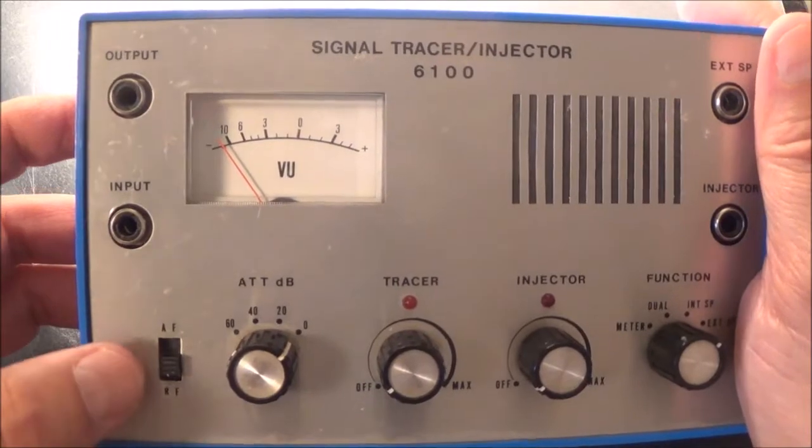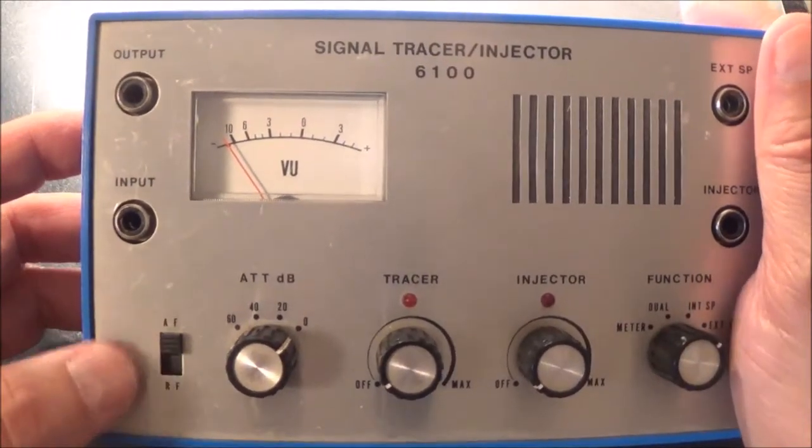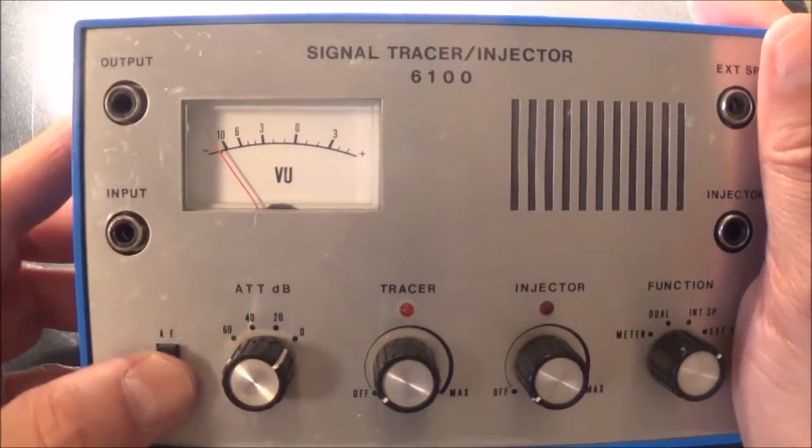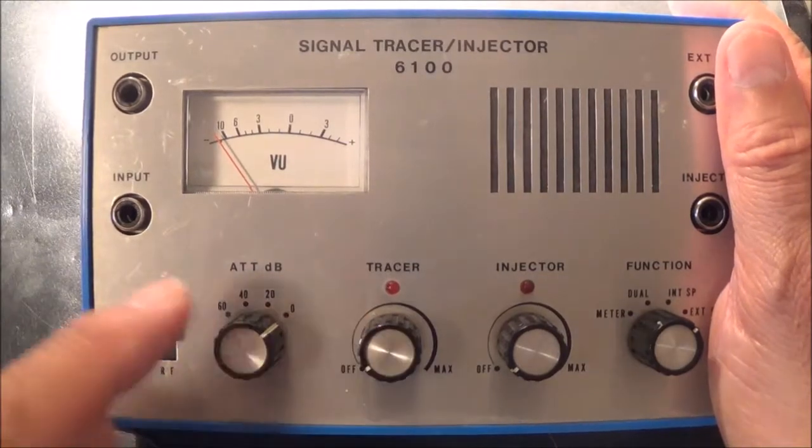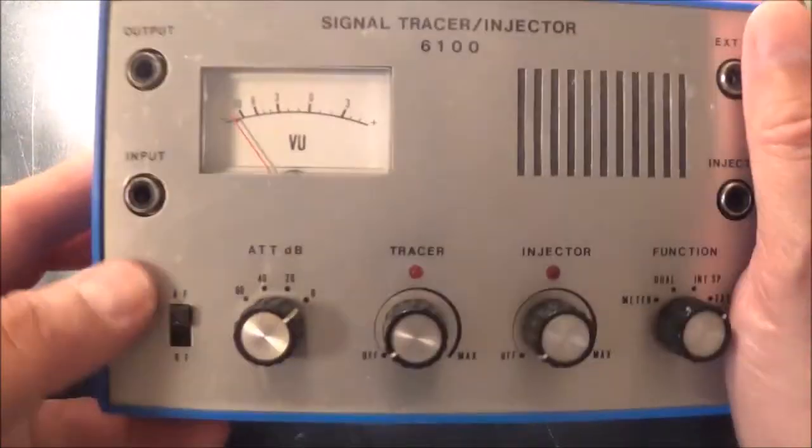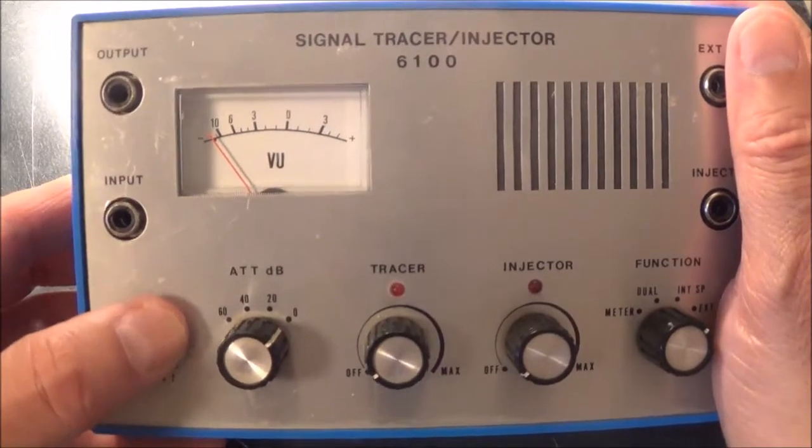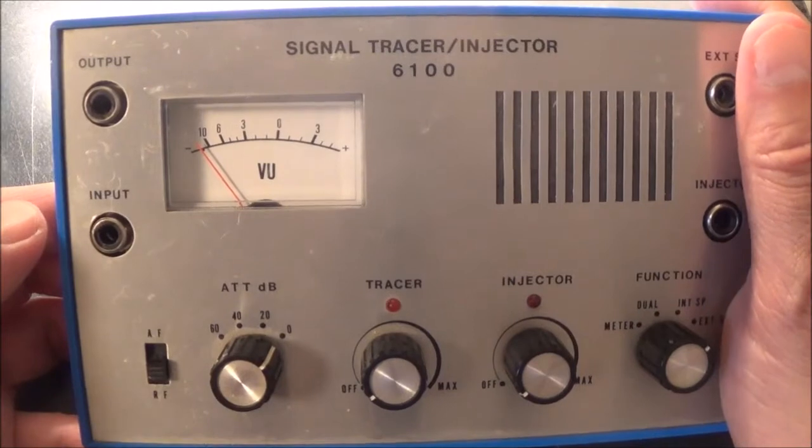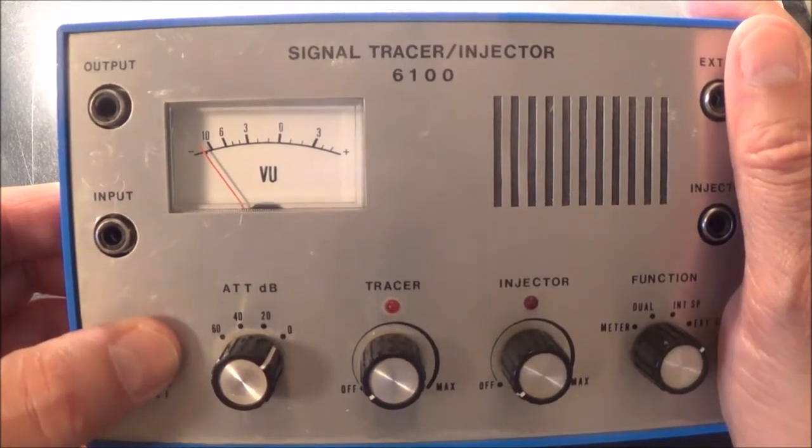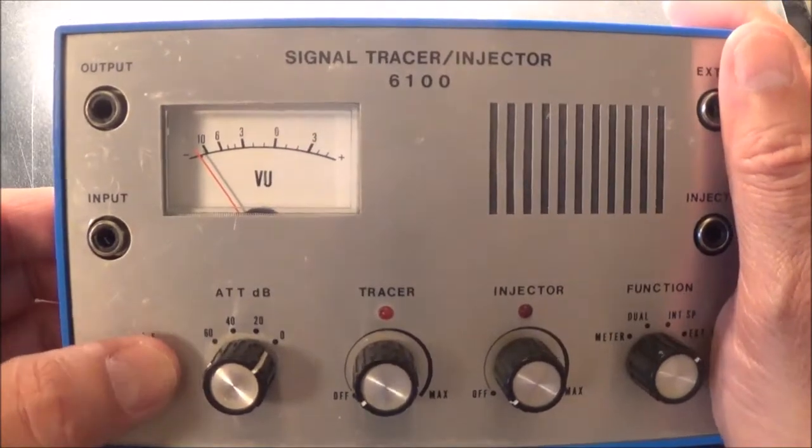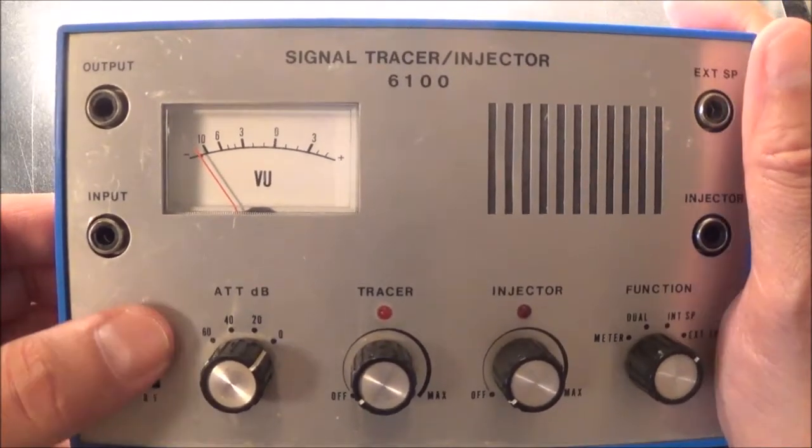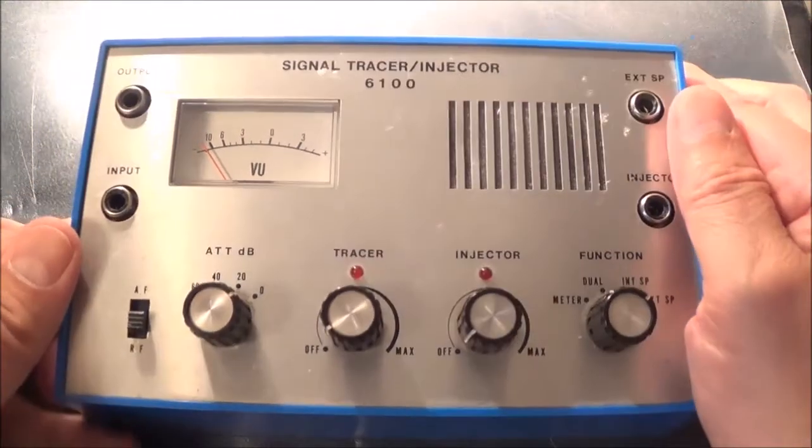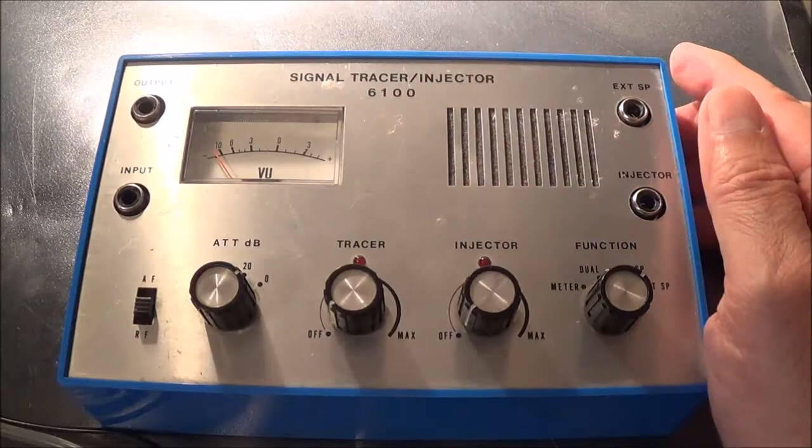It says AF, that's audio frequency. That's what I use basically whenever I use this unit. I only use the tracer. And here it says RF, that's anything high frequency. I don't know how high this thing goes, but I guess I could feed in a modulated AM signal and see what comes out. Let me go ahead and hook this thing up and get the oscilloscope turned on.